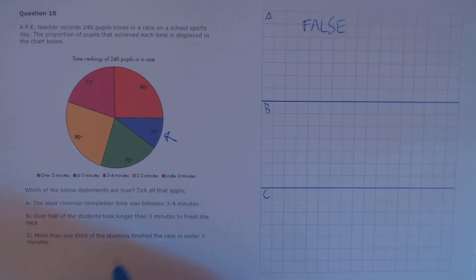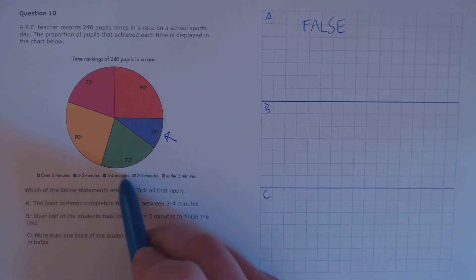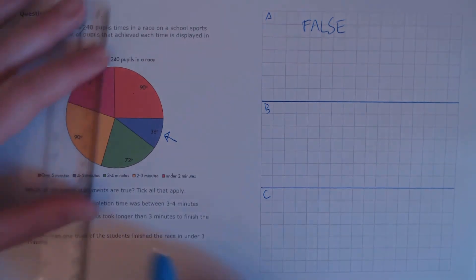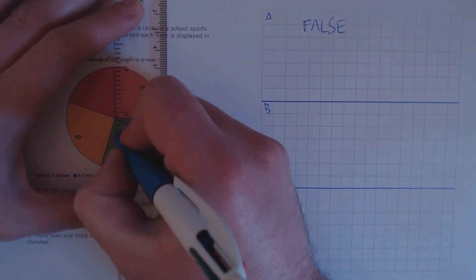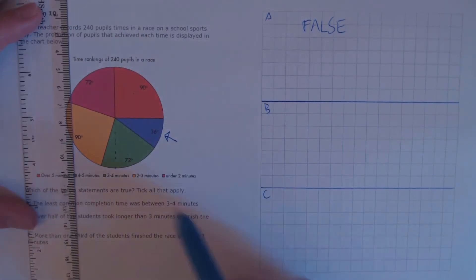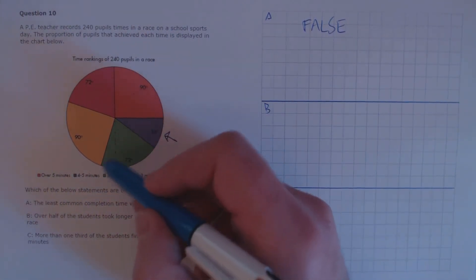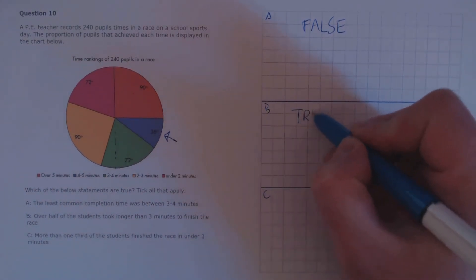B: over half of the students took longer than three minutes to finish the race. Those that took longer than three minutes are the red, blue, and green segments. If exactly half took that amount of time, we would expect the green segment to finish exactly at the halfway mark. However, it goes beyond that, meaning over half of them took longer. So true.